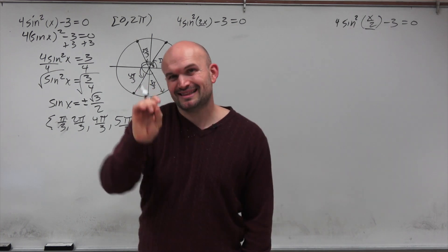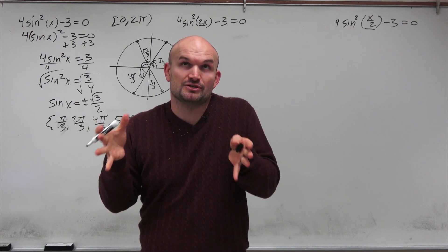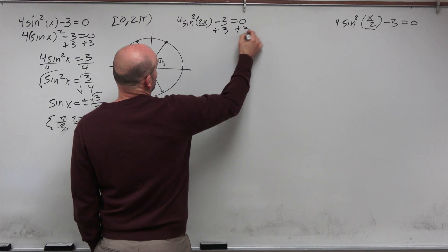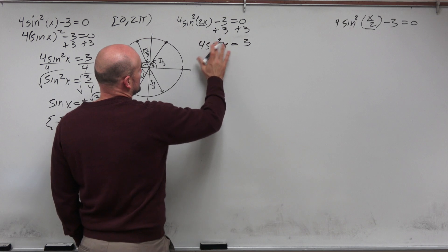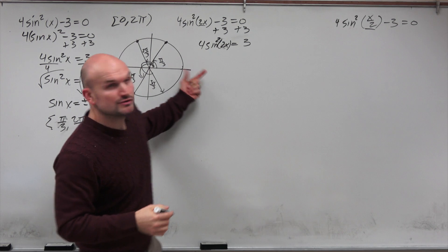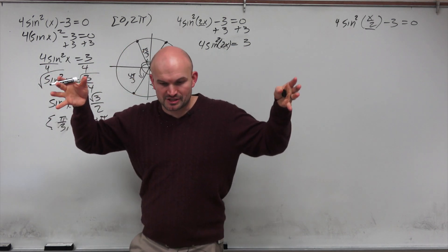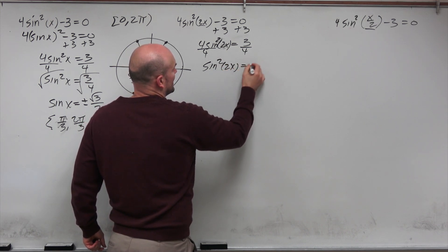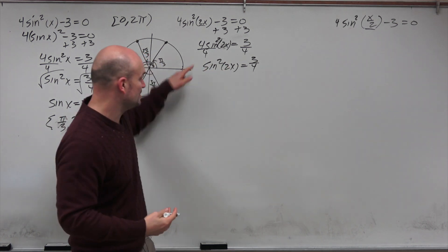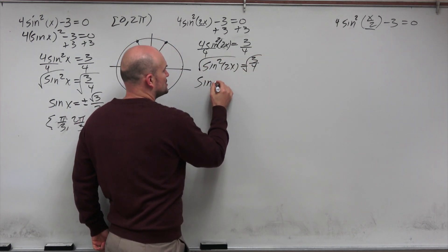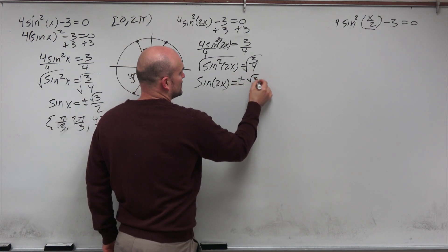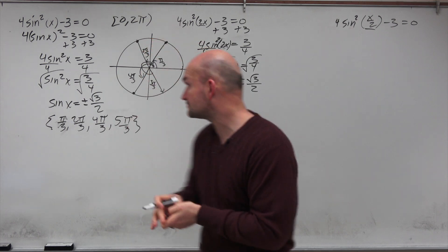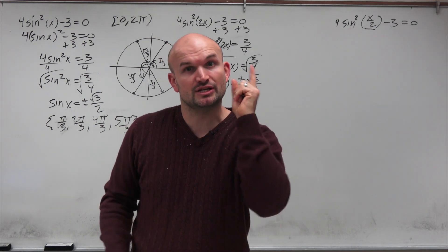Now what happens when we have 2x? We'll look at this algebraically and graphically. Using the same inverse operations — divide by 4 first, since we work from the outside in — we get sine squared of 2x equals 3/4. We can't divide by 2 until we remove the squared. So sine of 2x equals plus or minus the square root of 3 over 2. We also can't divide by 2 until we undo the sine.